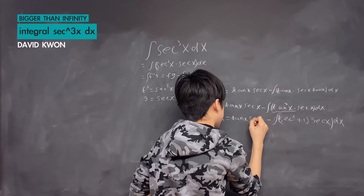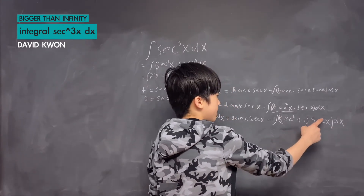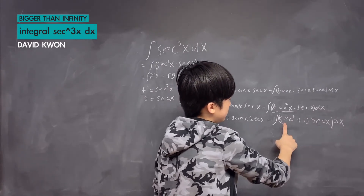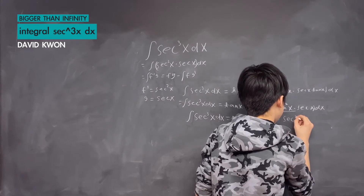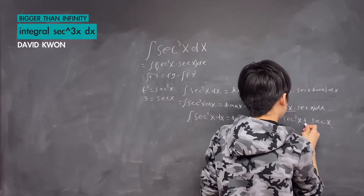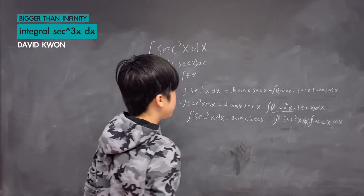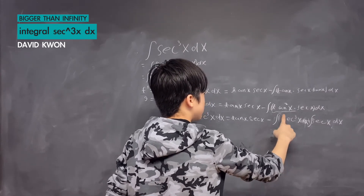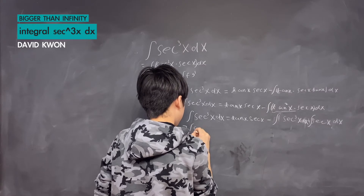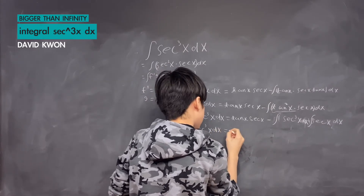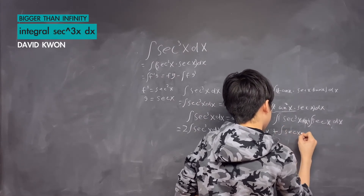We have a minus and then the integral of secant cubed x times dx. This is equal to tangent x times secant x. I simplified by multiplying secant x by secant squared x and by one, so I get secant cubed x plus secant x. Now I can add the integral of secant cubed x to both sides, giving us two times the integral of secant cubed x equals tangent x times secant x plus the integral of secant x dx.